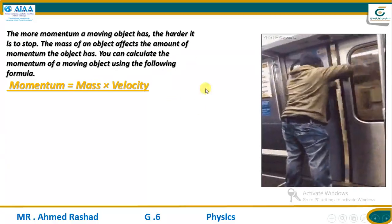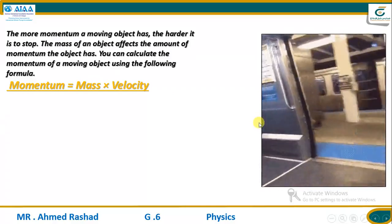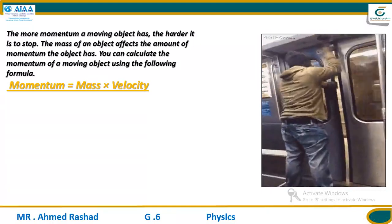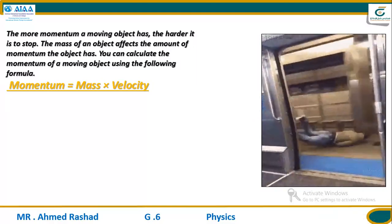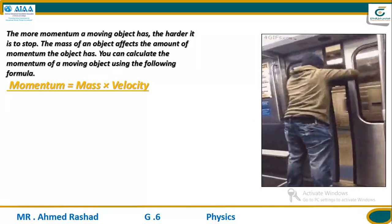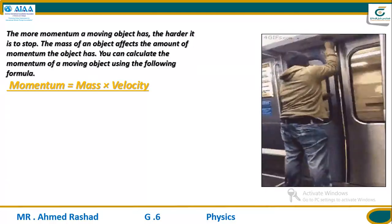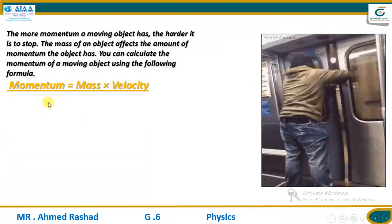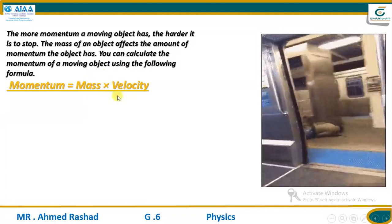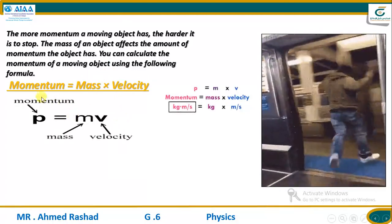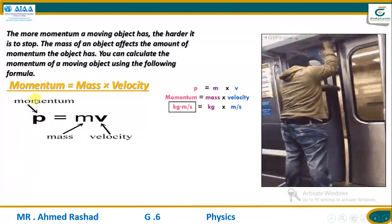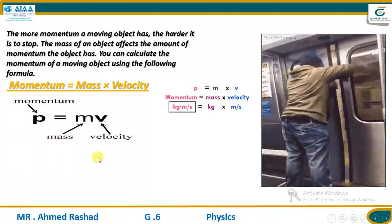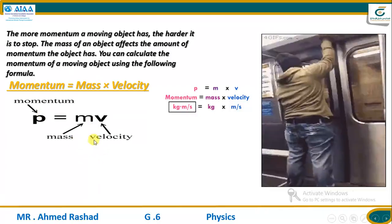This shows a man riding a train who has the same momentum as the train. When he jumps out of the train in a direction different from the train's direction, that can suddenly change his direction and momentum. We can calculate momentum using the formula: momentum equals mass times velocity. Momentum (P) equals M times V, where M is mass and V is velocity. Momentum depends on the mass and velocity of an object.